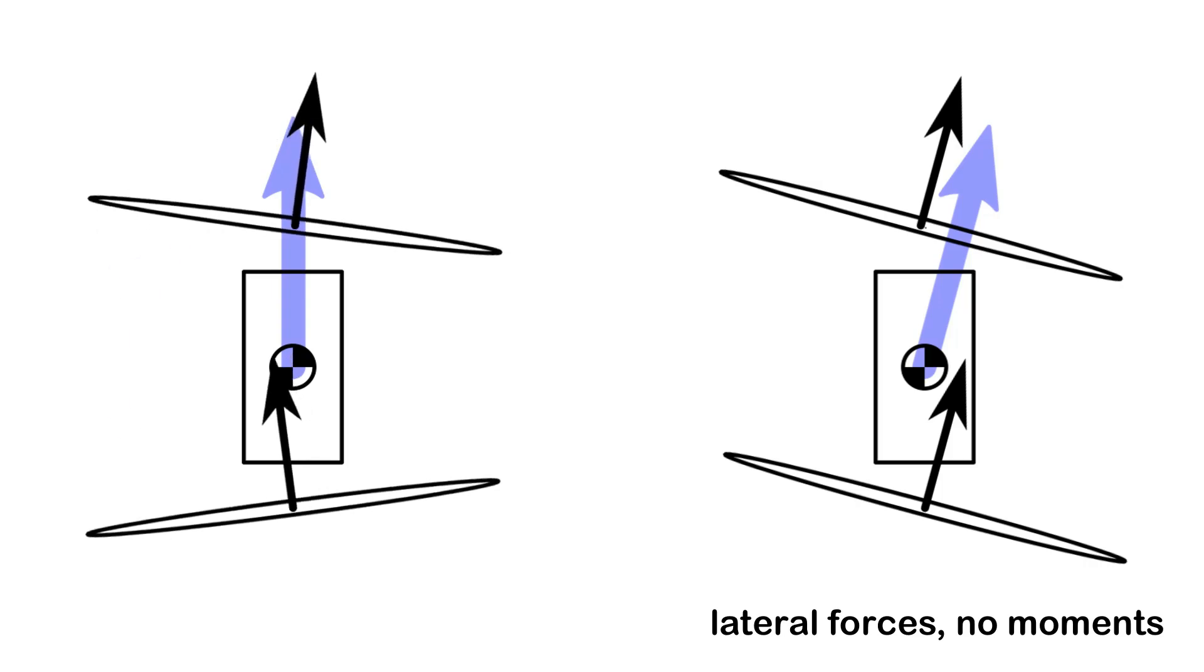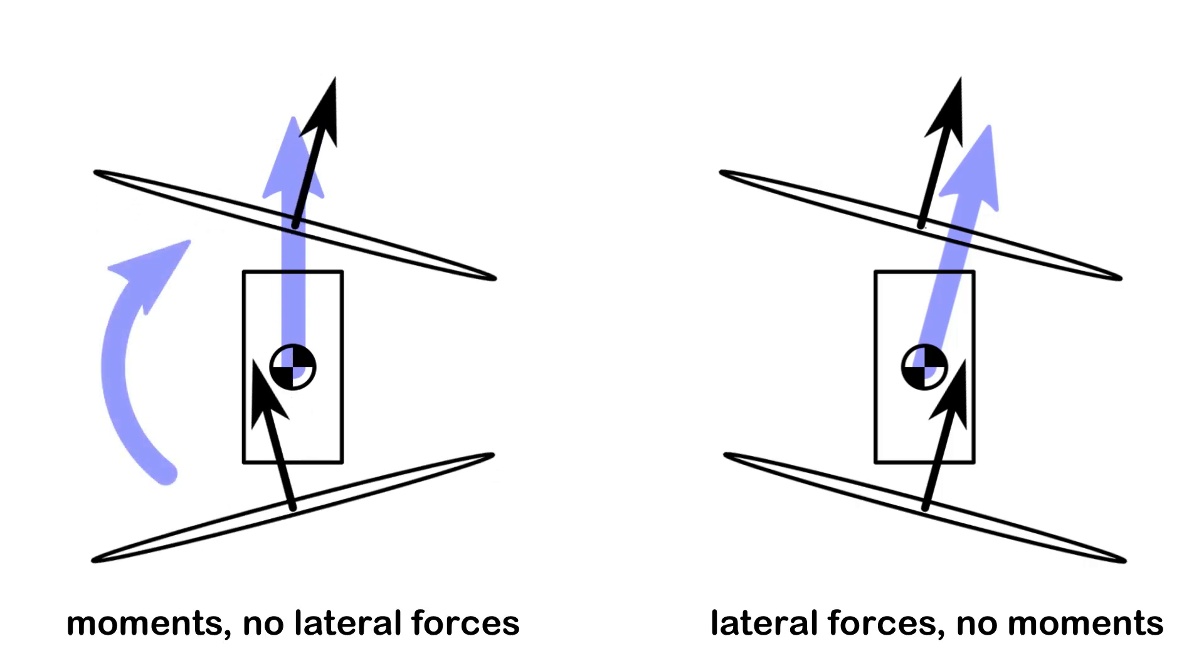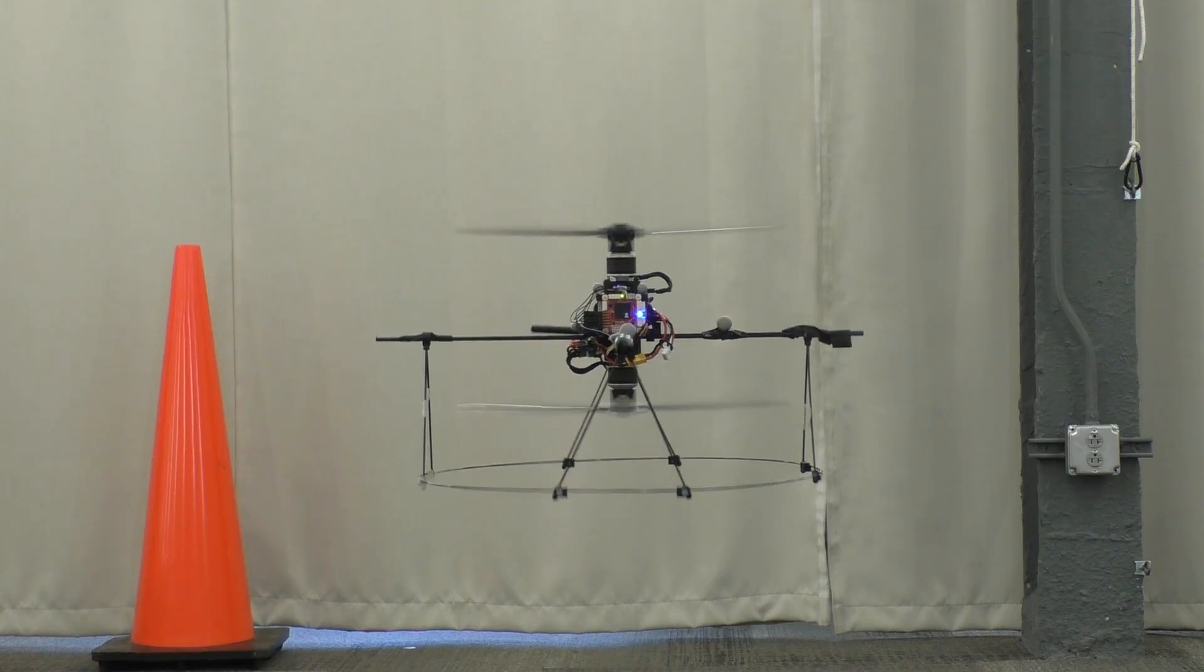If we instead tilt the rotors in opposite directions, we generate rotational moments that can rotate the entire aircraft.